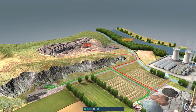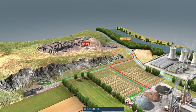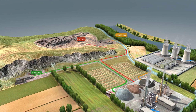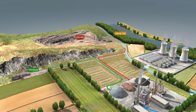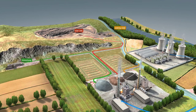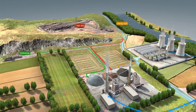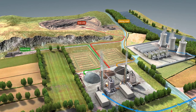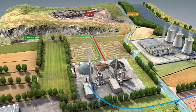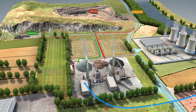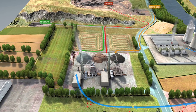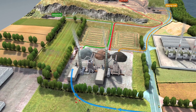Iron does not occur in nature in its elemental form. It must be extracted from iron ores by smelting. This process also requires coal, limestone or dolomite, as well as a power plant that provides electric power. For economic reasons, iron smelters are built in the vicinity of mines and power plants.